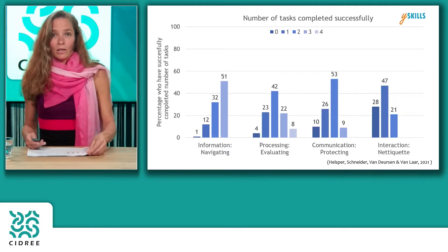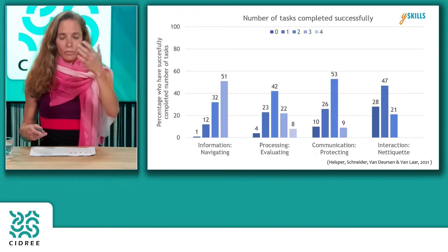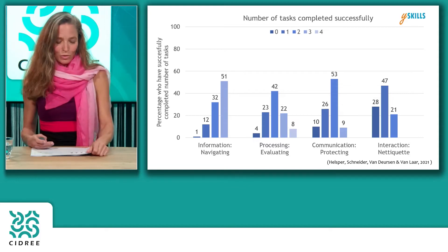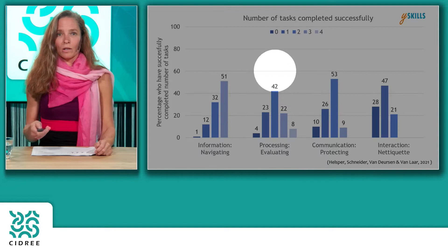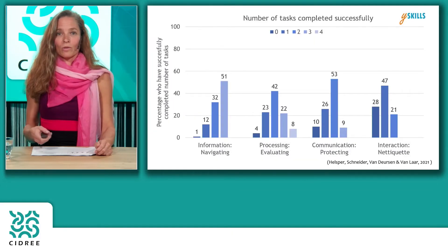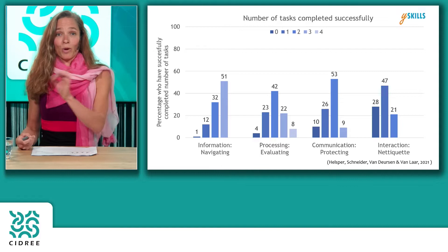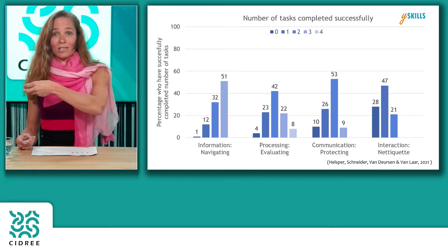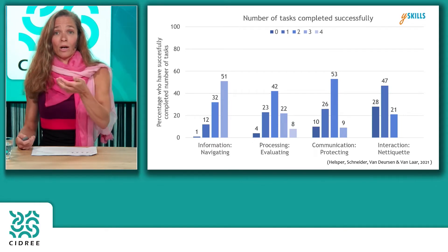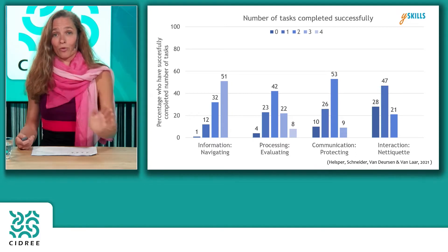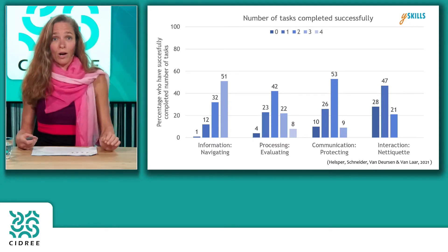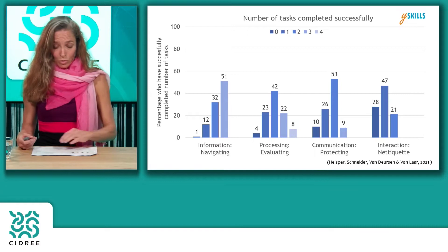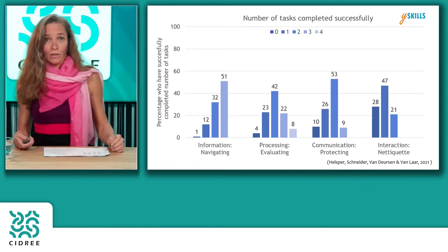Looking at another example of results from that performance test: students and young people score much less well when we get to communication, critical protection of information, and interaction etiquette in terms of how to interact with others. They are not able to complete these performance tests for those specific skill areas as well as they are for the more traditional technical and functional skills in relation to information — as we can see on the left-hand side of this slide.